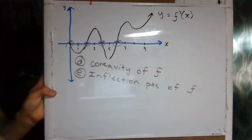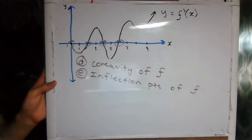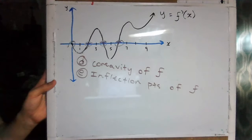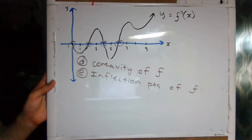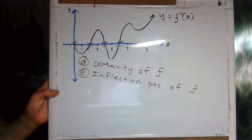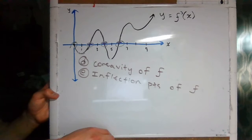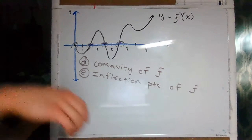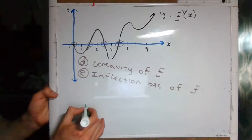We just went through parts a, b, and c of this problem — finding the intervals of increase or decrease of f, finding the minimums of f, and finding the maximums of f. Now with parts d and e we have to find the intervals of concavity of f and the inflection points of f. So just really quick, if we have some arbitrary function...